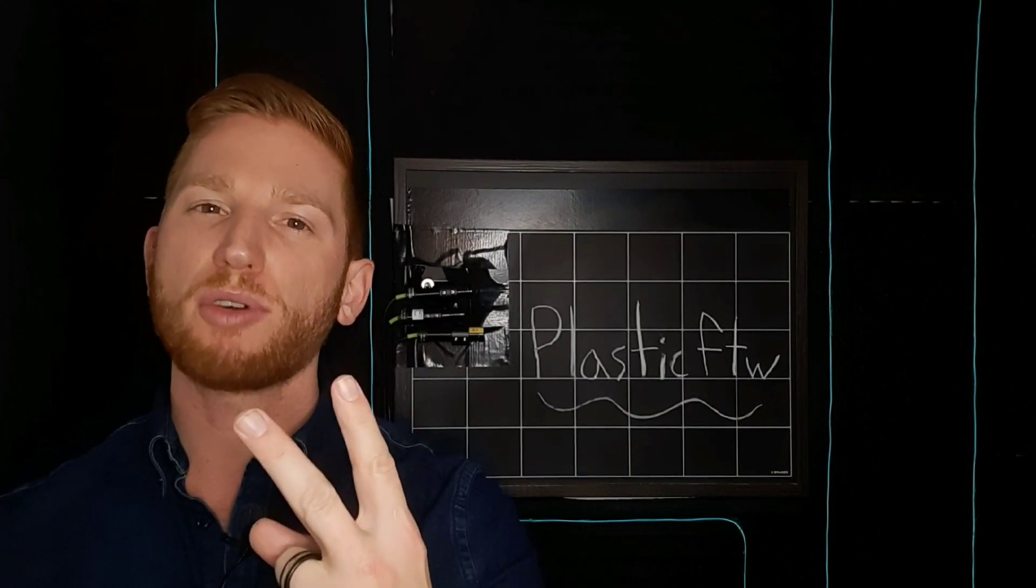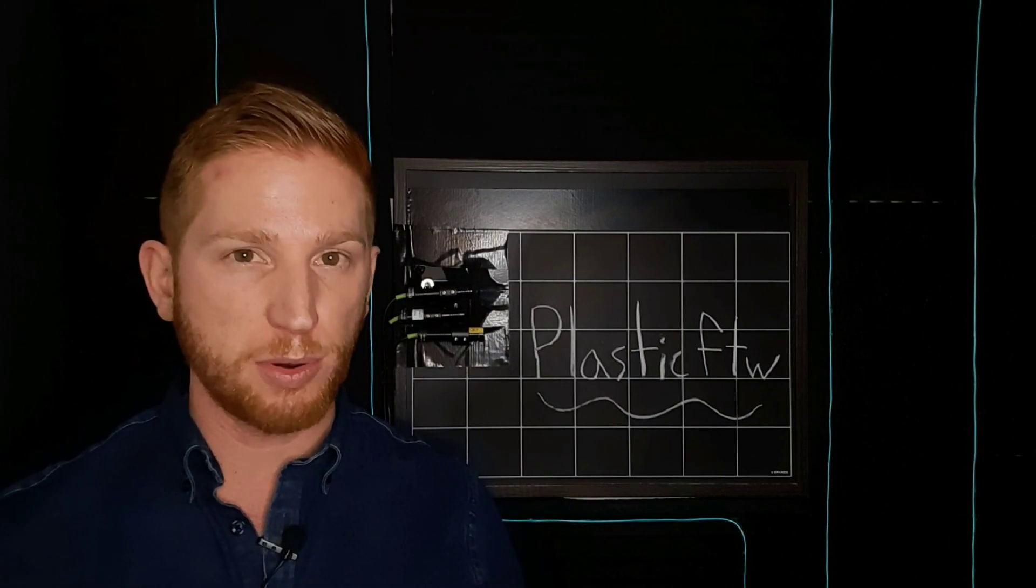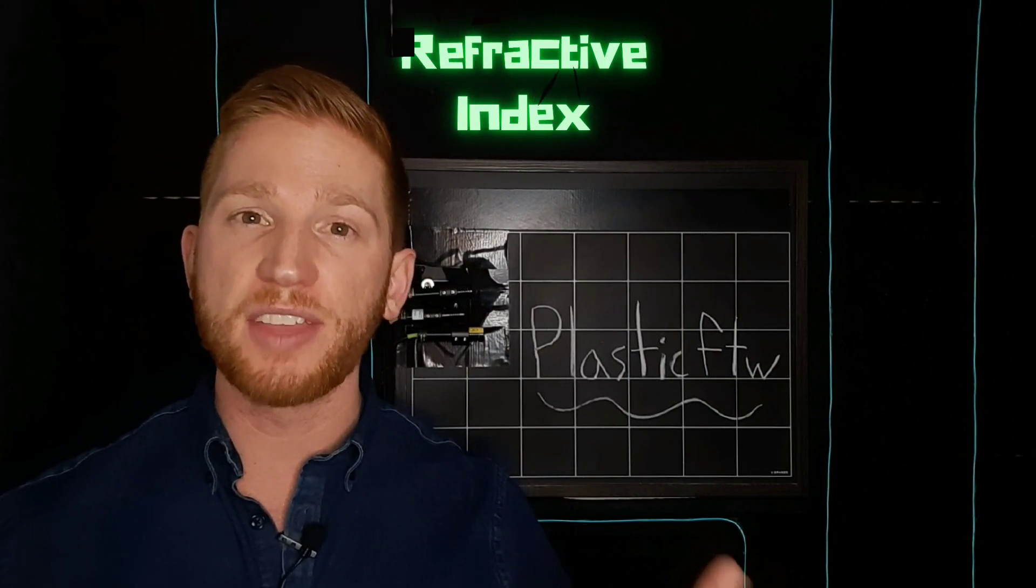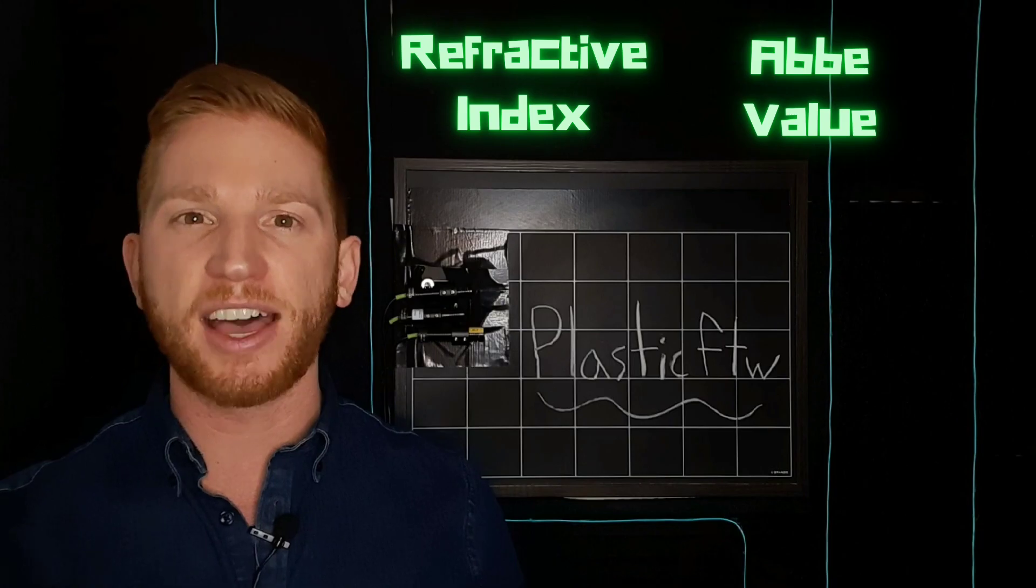There are two main properties of your plastic lenses that define how they perform: their refractive index and their abbey value.